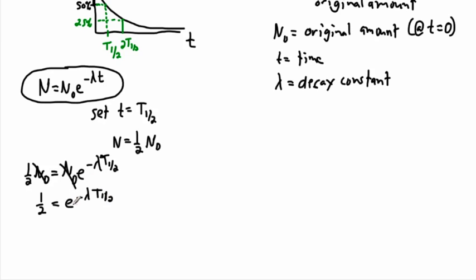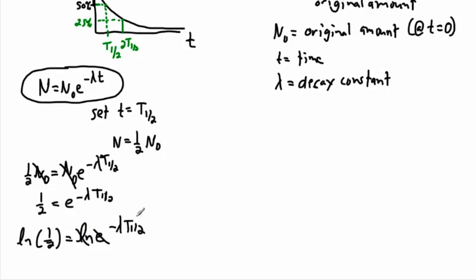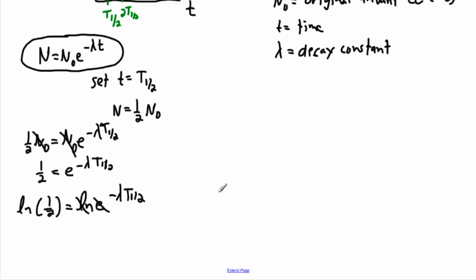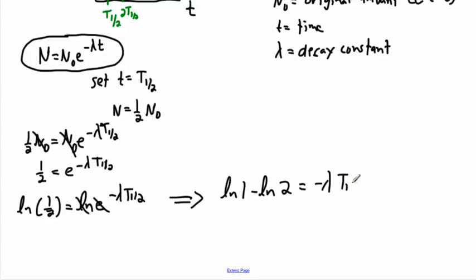I want to get rid of the e to solve for t one-half, so I take the natural log of both sides: natural log of one over two equals natural log of e to the minus lambda t one-half. The natural log and e undo each other on the right. On the left, I can use log rules: natural log of one over two equals natural log of one minus natural log of two, and that equals minus lambda t one-half.